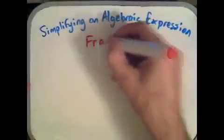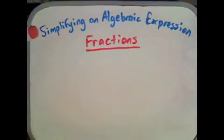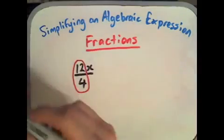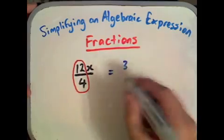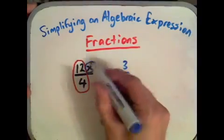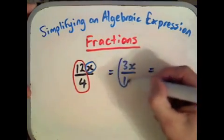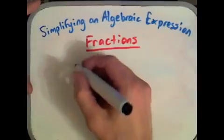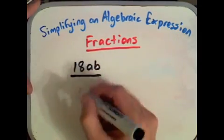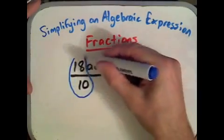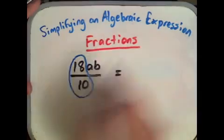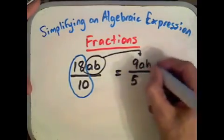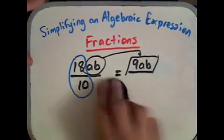Now let's look at simplifying algebraic expressions using fractions or division. For 12x divided by 4: 12 divided by 4 is 3, so we get 3x. For 18ab divided by 10: simplify 18 over 10 by halving both — since they're both even — to get 9 over 5. Keep a and b on top as numerators, giving 9ab over 5. We can't simplify that any further.